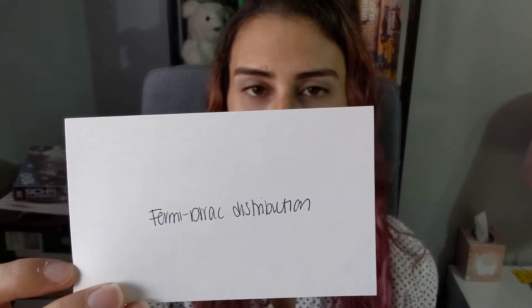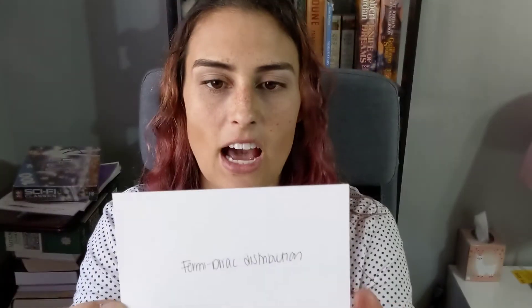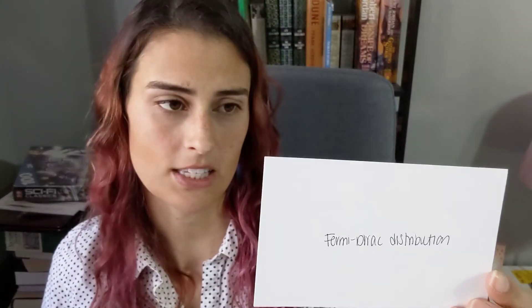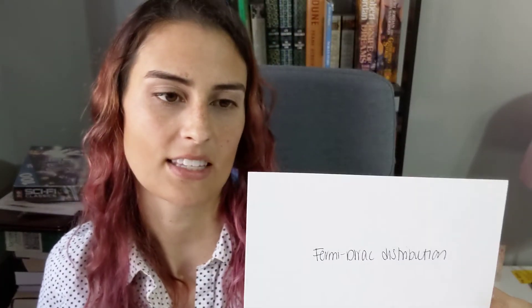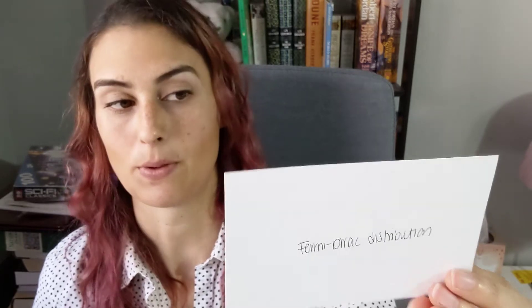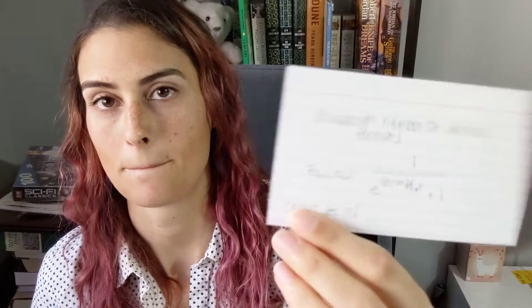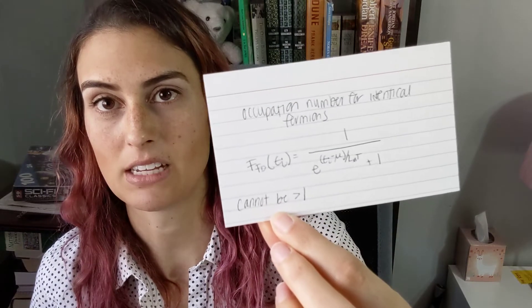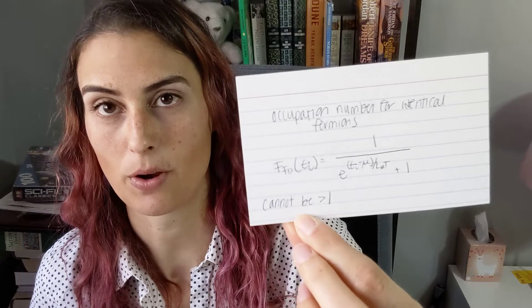The Fermi-Dirac distribution gives the occupation number for identical fermions, and is given by 1 over (e to the (epsilon_i minus mu) over k_B T, plus 1). This cannot be greater than one.